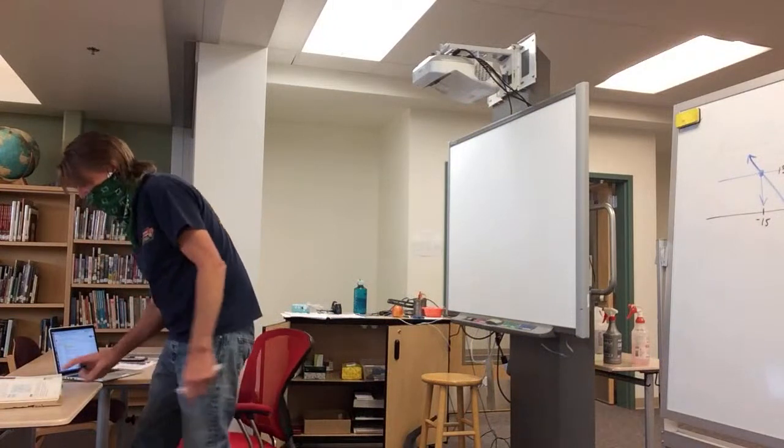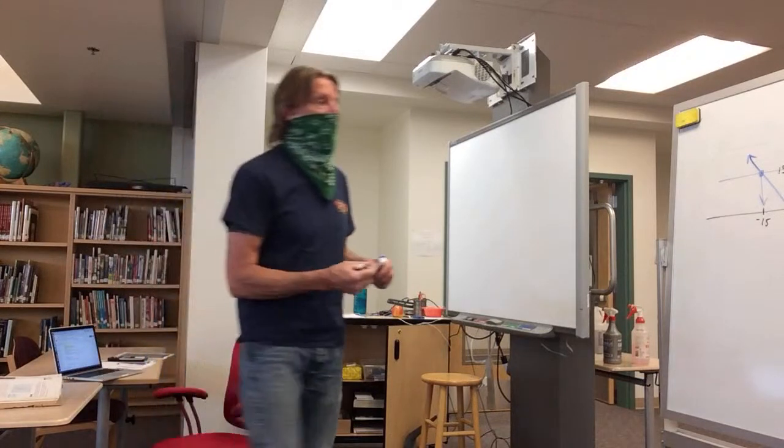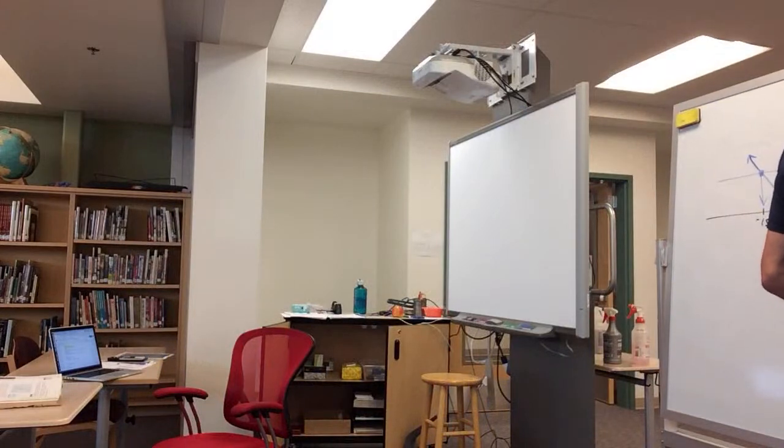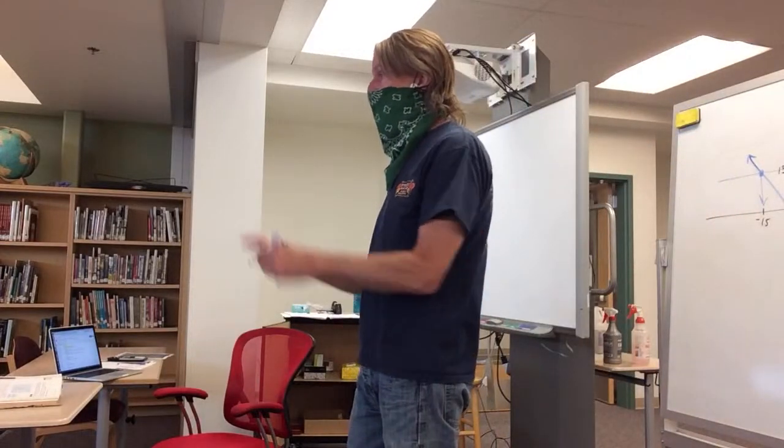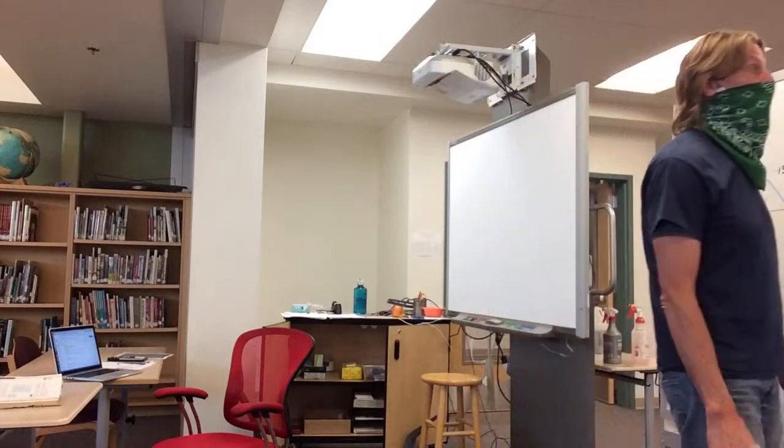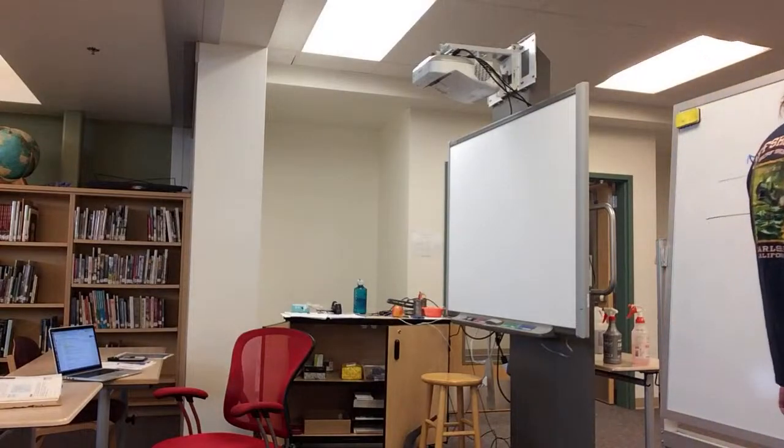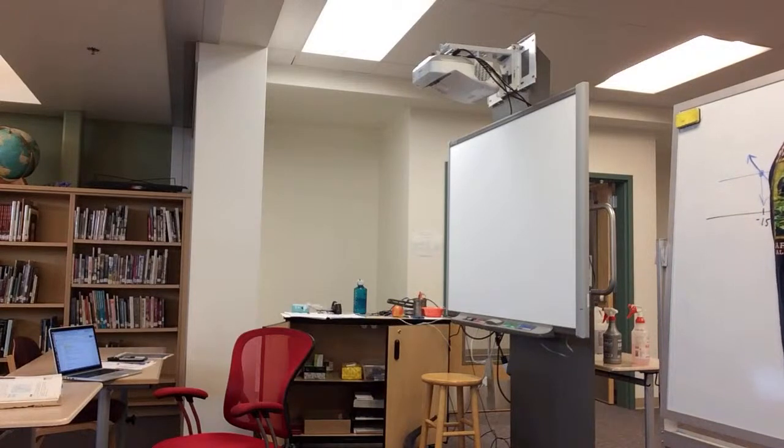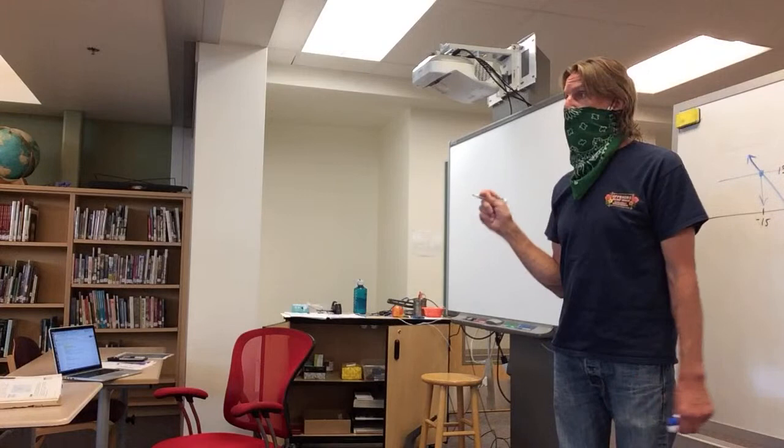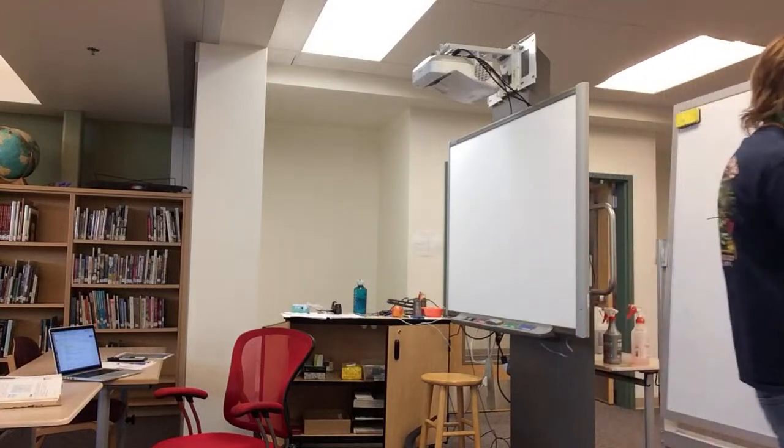How about number 13? w minus 5's absolute value is equal to zero. It would be 5, just only 5. w minus 5 can be equal to zero and only equal to zero. The only way to get zero out of this is if that's equal to zero. So if you solve that, w is going to be 5.